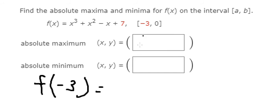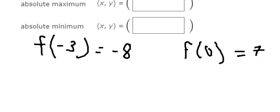So we got F of negative 3 equals negative 8, and F of 0 equals 7. Now we need to find the derivative of the function, so we got 3x squared plus 2x minus 1.